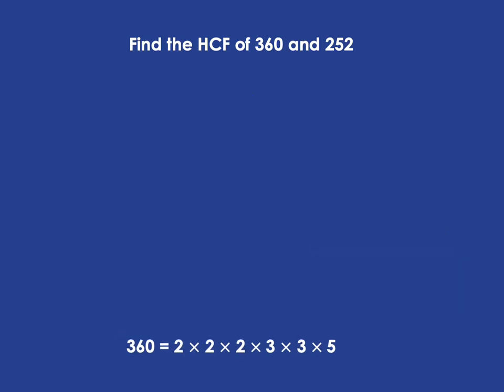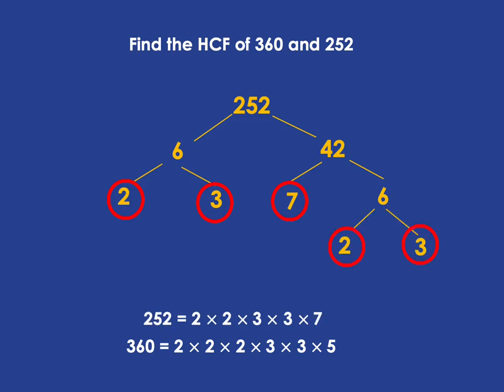We do the same with 252. So I break it up as 6 times 42. 6 can be broken up into 2 times 3 and those are prime. 42 can be written as 7 times 6 and 7 is prime. 6 can then be written as 2 times 3 and those are prime. And so we've got 252 is 2 times 2 times 3 times 3 times 7.